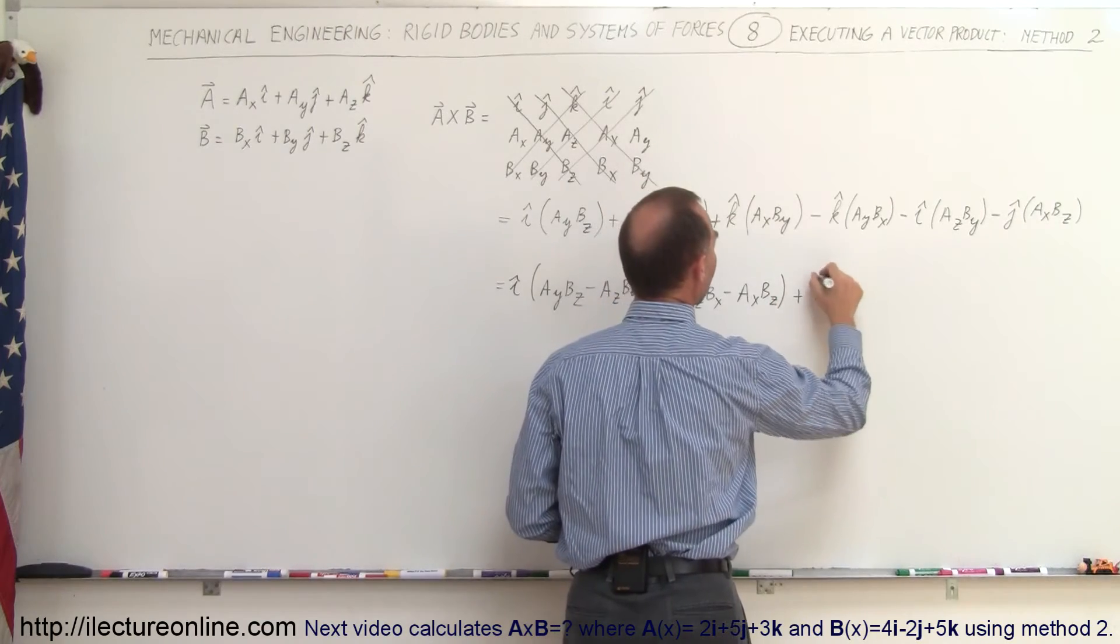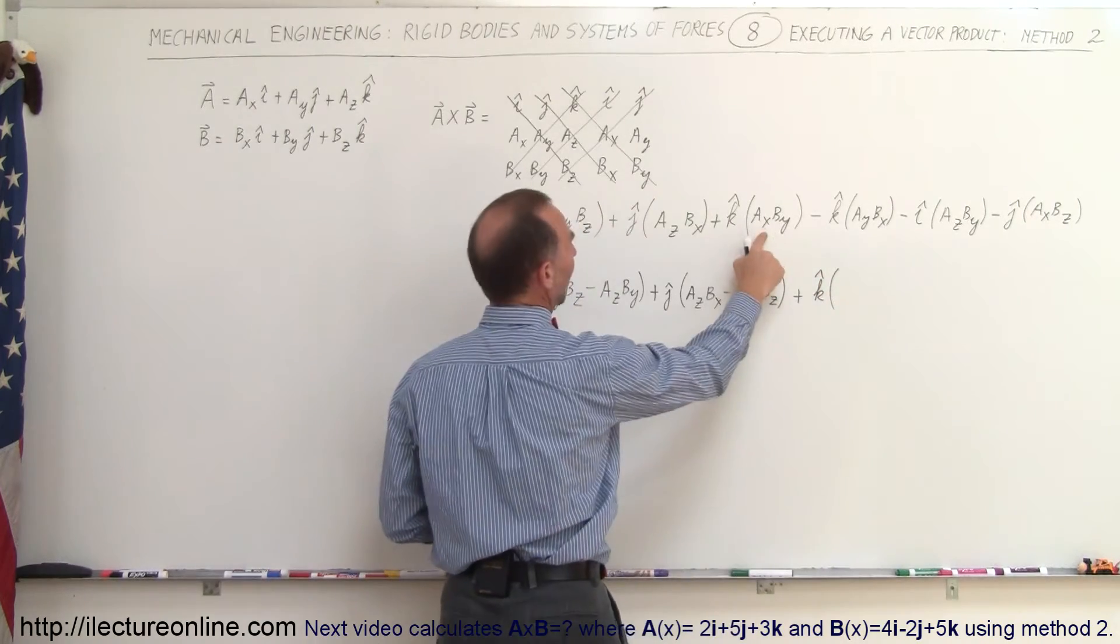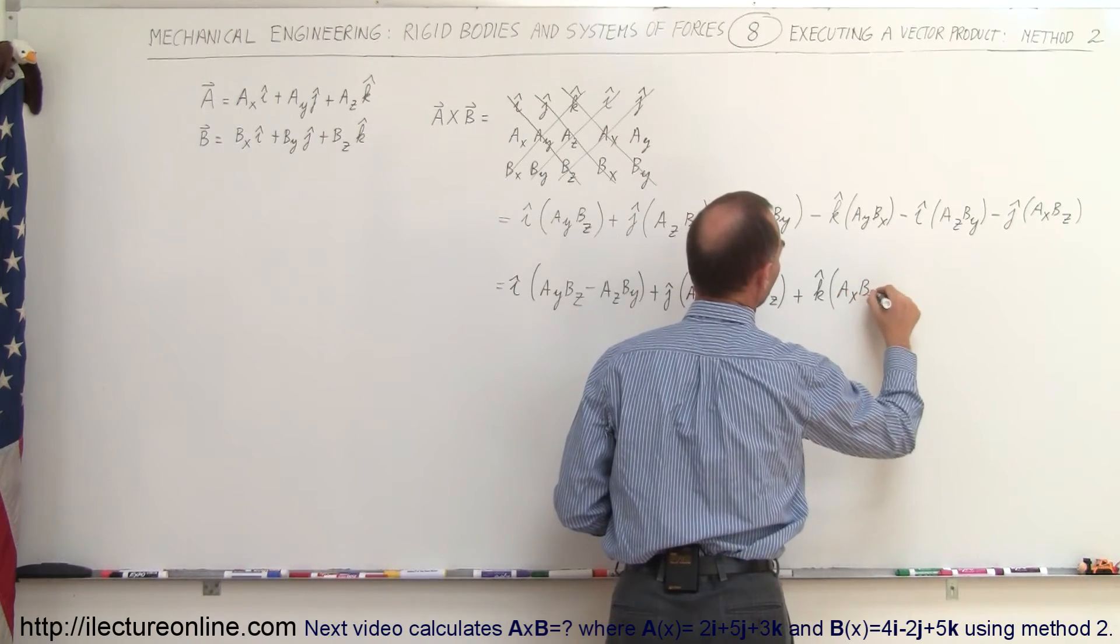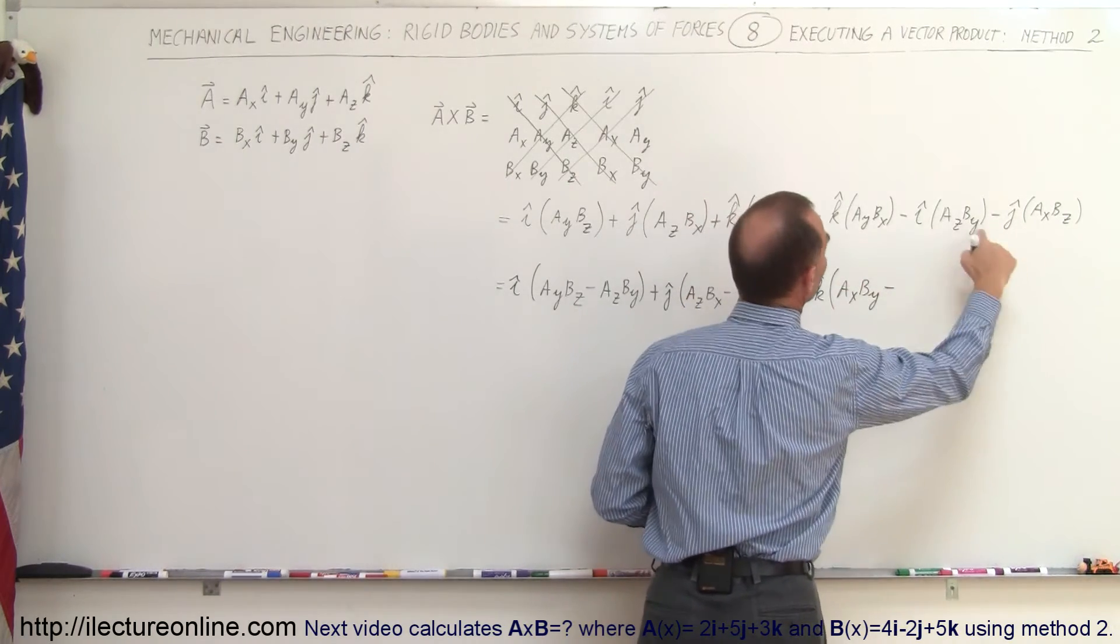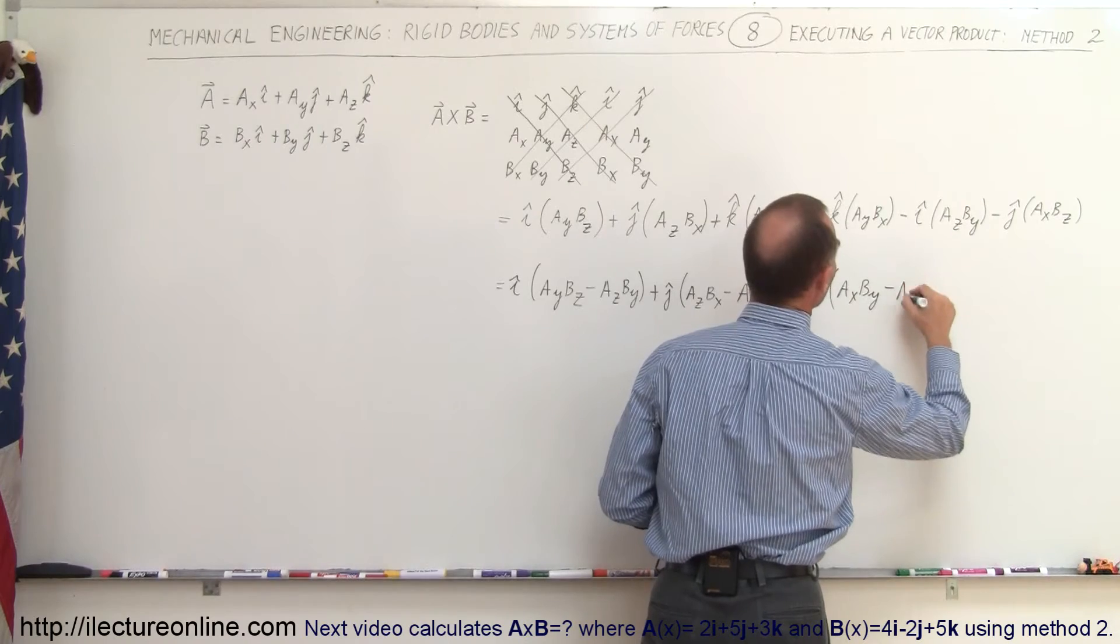And then plus K times, and here we have A sub X B sub Y minus right here A sub Y B sub X.